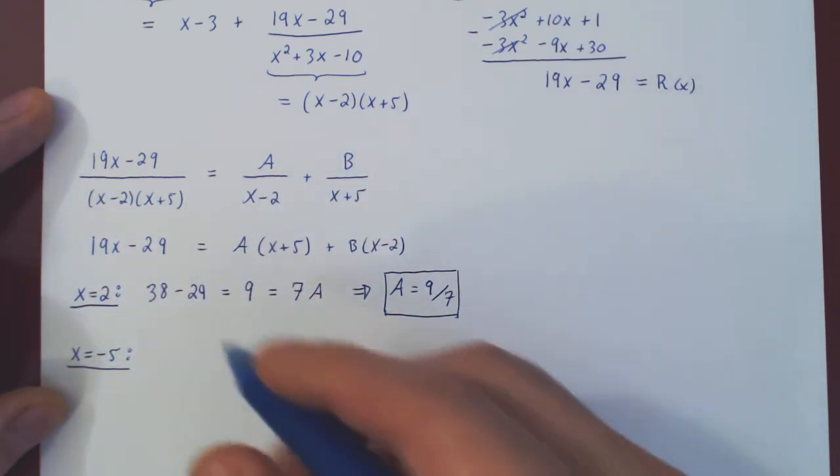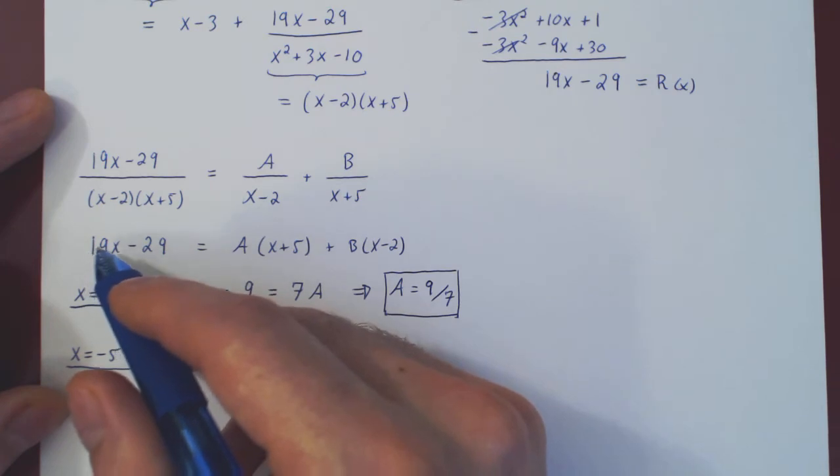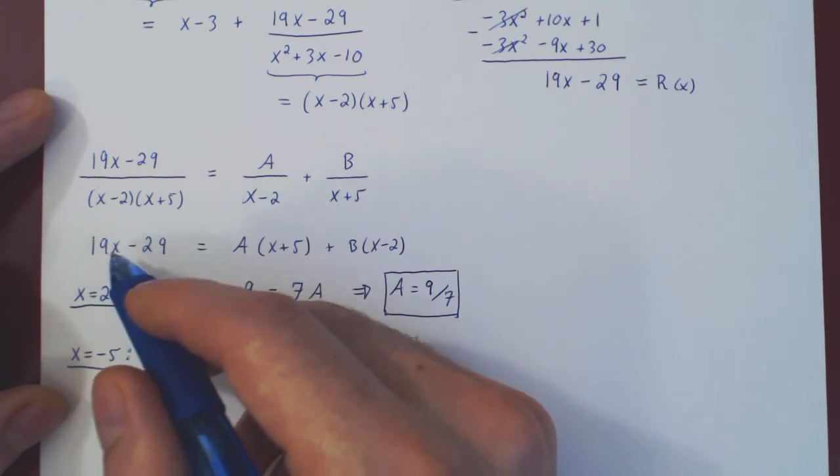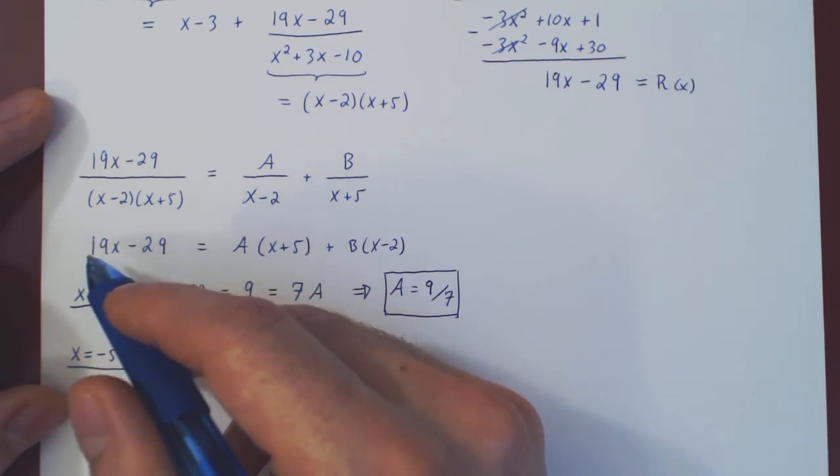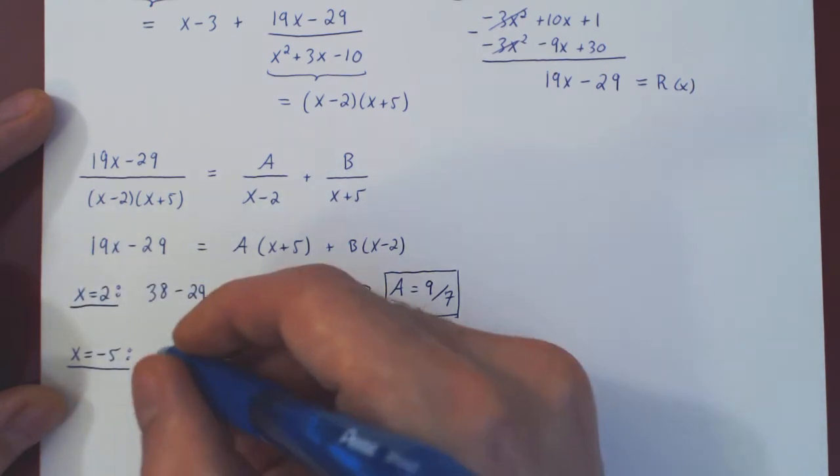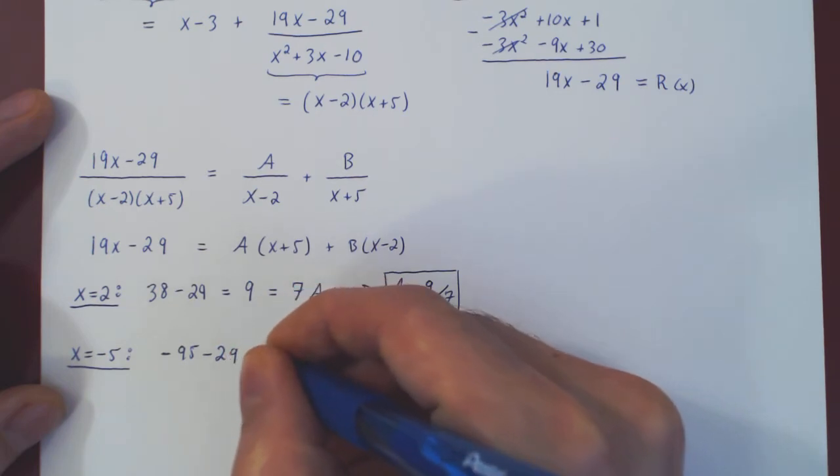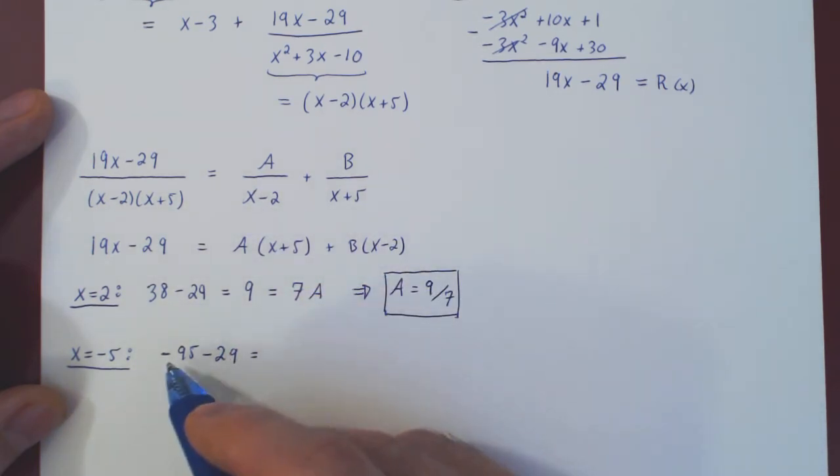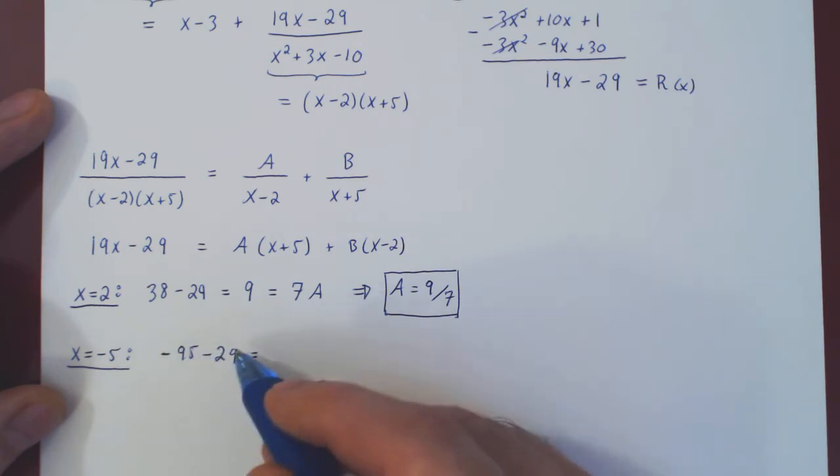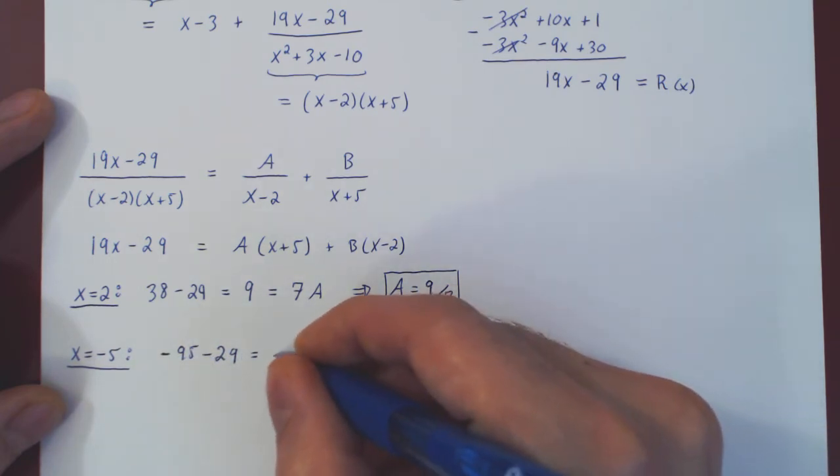And if we do so, negative 5 times 19, that's negative 95, minus 29 will give us minus 124. This would be equal to negative 7B.